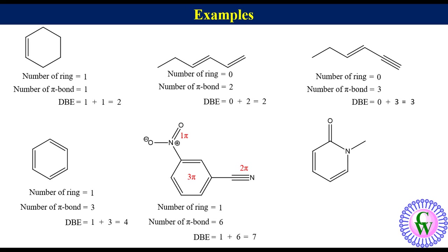1-methyl-2-pyridone, here number of ring is equal to 1. There are 2 pi bonds in the ring and 1 in carbonyl group. So the number of pi bonds will be equal to 3. Thus the DBE is equal to 1 plus 3 is equal to 4.